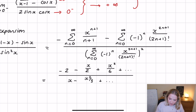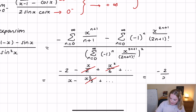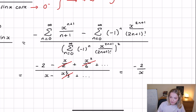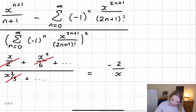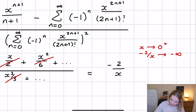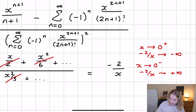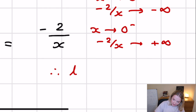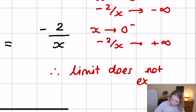Looking at the leading order terms, we end up with minus two over x. Now we can do the one-sided limits again: if x tends towards zero plus, then minus two over x tends towards negative infinity; and if x tends towards zero minus, minus two over x tends towards positive infinity. Therefore the limit does not exist, because it approaches two different values at the point where the limit is supposed to exist.